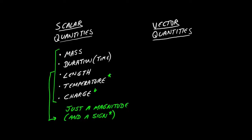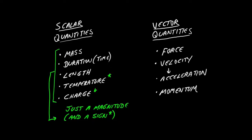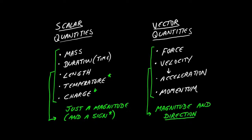How about vector quantities? What's different about vector quantities? Think about these things: force, velocity, and therefore acceleration, or momentum. These things also have a strength or a magnitude. However, they also have a direction — more than just a sign, they have a full-on direction in three-dimensional space. So it's not enough to know that a force is three newtons; I want to know in which direction that force is applied. And that is the difference between a vector and a scalar quantity.